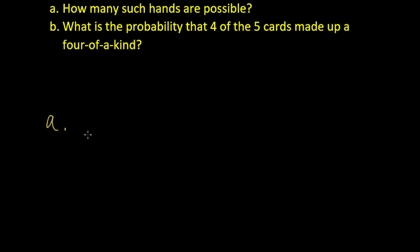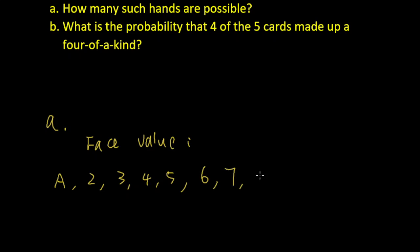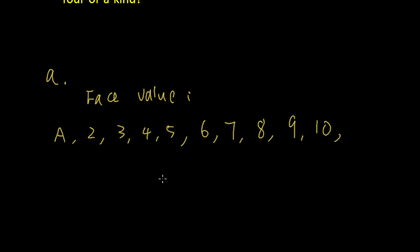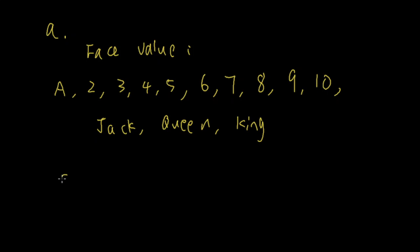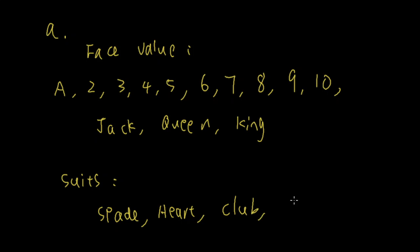There are 13 face values in poker: Ace, 2, 3, 4, 5, 6, 7, 8, 9, 10, Jack, Queen, and King. Each of these face values has 4 suits: Heart, Spade, Club, and Diamond.